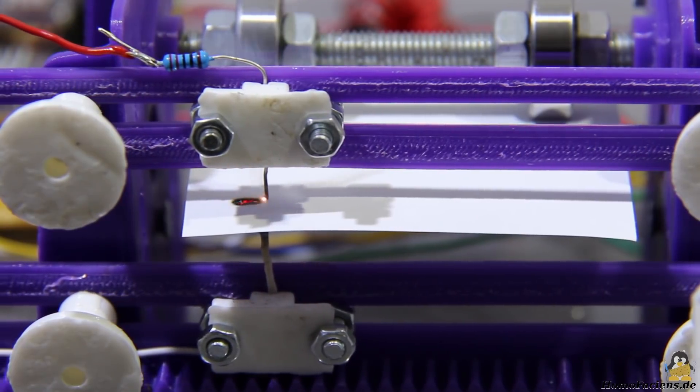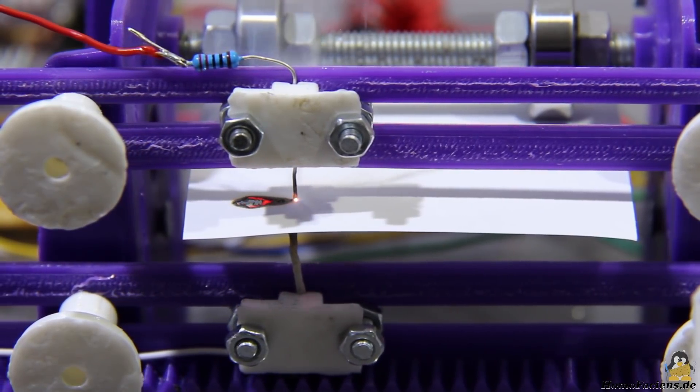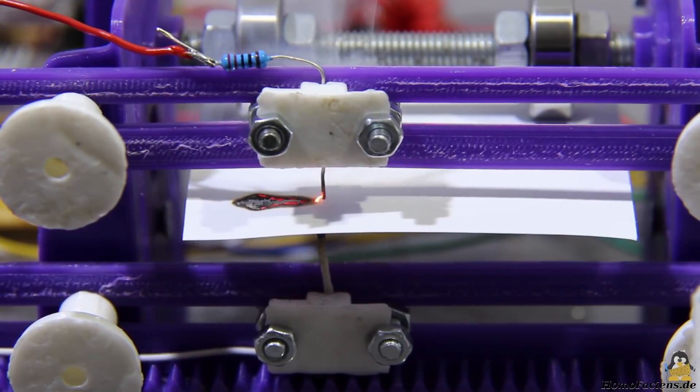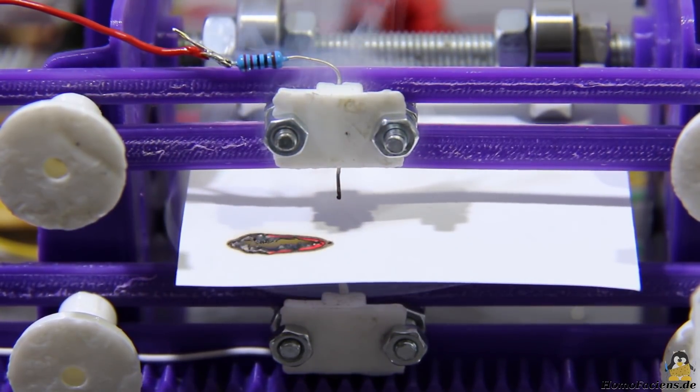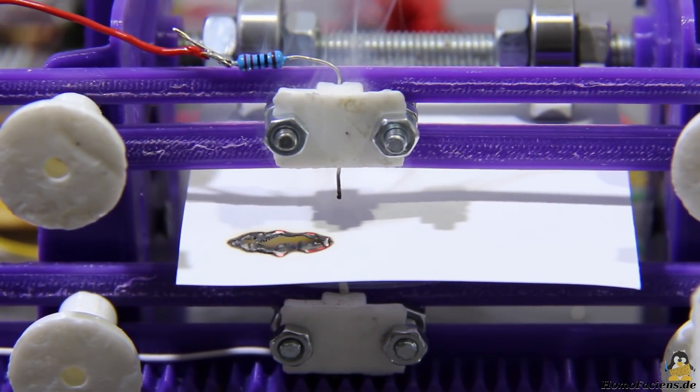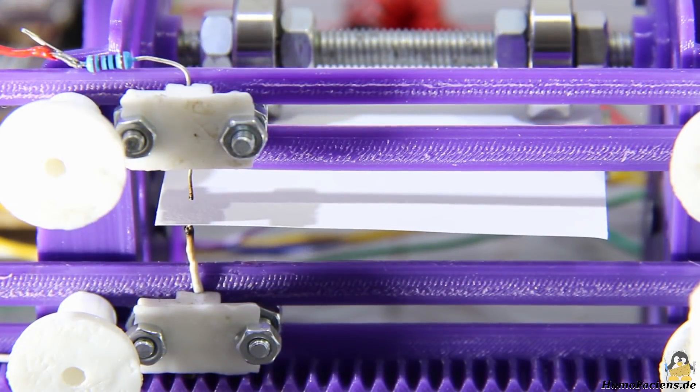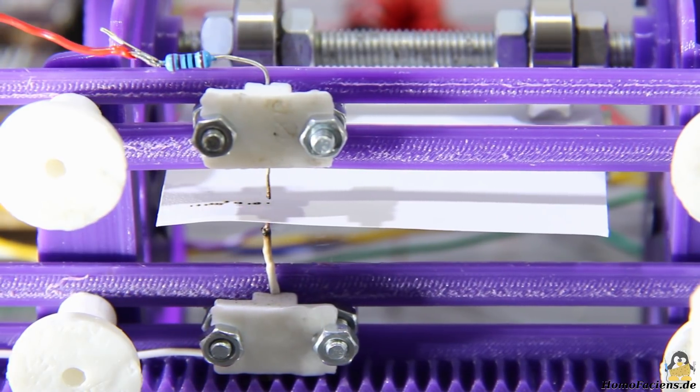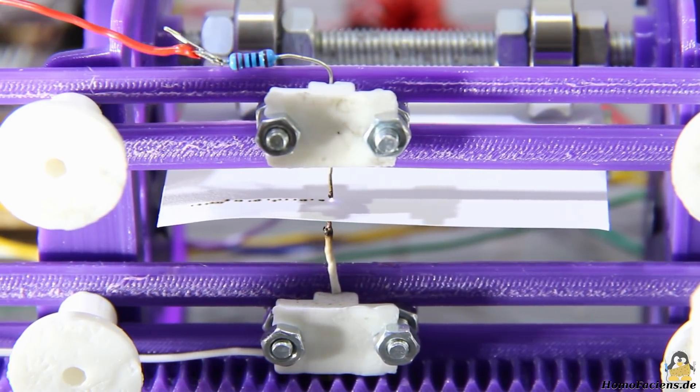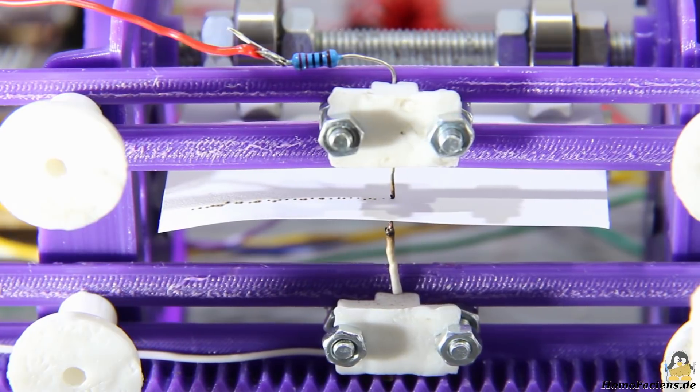Since the paper gets burned at each dot during printing, black areas in your print result in a large burned hole. So the graphics must be transformed into a grid with a certain distance between the dots, similar to good old newspaper pictures.